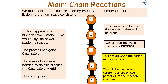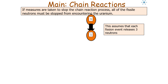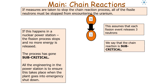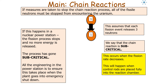If measures are needed to stop the chain reaction, all fissile neutrons must be stopped from encountering uranium, going from one event to one and then stopping. The fission process stops and no more energy is released — the process has gone subcritical. All the engineering in a power station is to ensure this takes place when a nuclear power plant goes into emergency shutdown. A subcritical chain reaction occurs when the fission rate decreases, achieved by placing control rods fully into the reaction chamber.